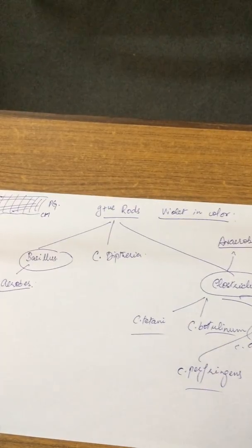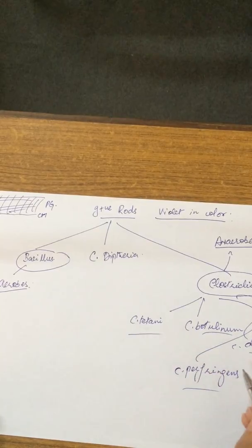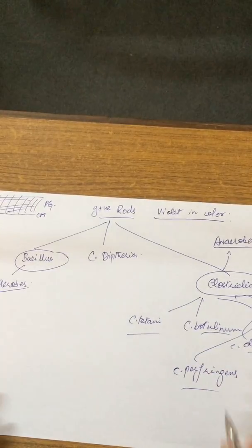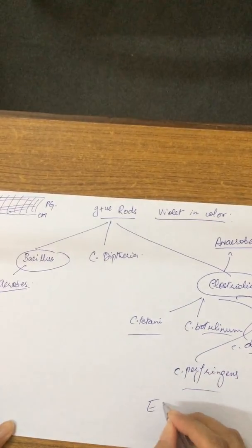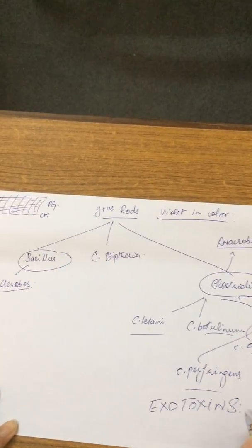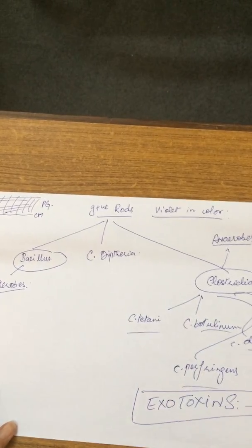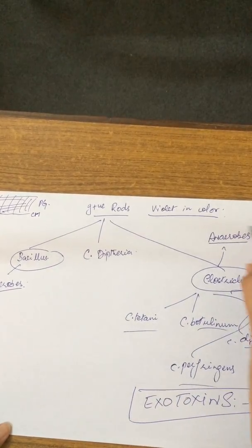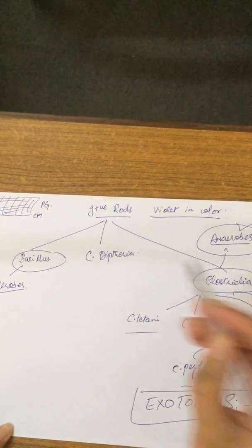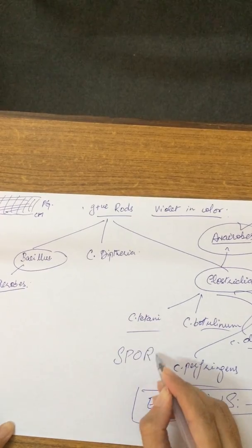All are anaerobic. We should know which diseases they cause and most importantly, all have exotoxins. You should know the mechanism of action of their exotoxins. They are anaerobes, gram-positive rods, and they have spores. These are their basic characteristics.